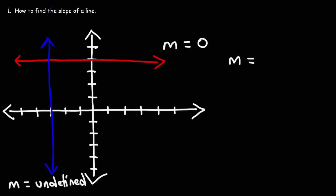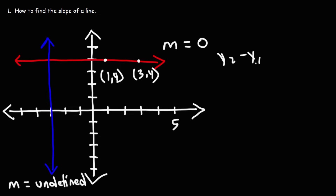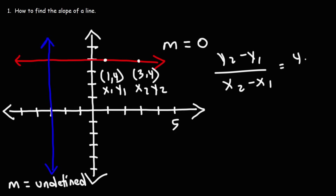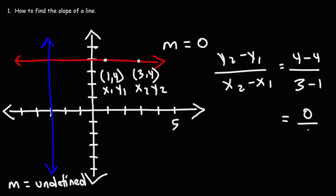You can confirm this with the formula. If we pick the points (1, 4) and (3, 4) on the horizontal line, and use Y2 minus Y1 over X2 minus X1: Y2 is 4 and Y1 is 4, so the numerator is zero. For a horizontal line, Y2 and Y1 will always be the same, so you always get a rise of zero and a slope of zero.